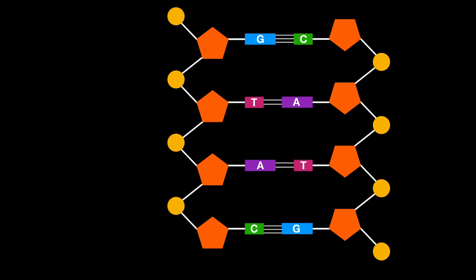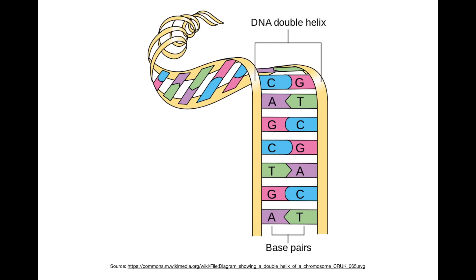Notice that the two strands that make up the DNA go in opposite directions, so they are said to be anti-parallel. These two strands then coil up to form a helix.